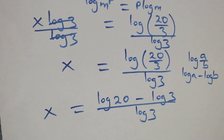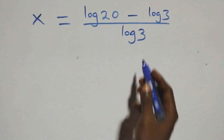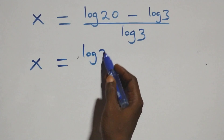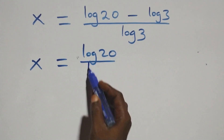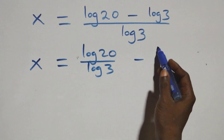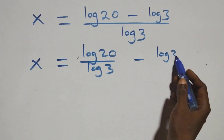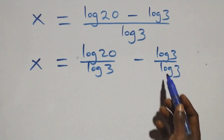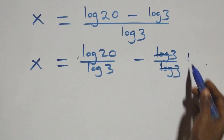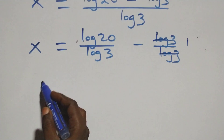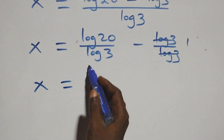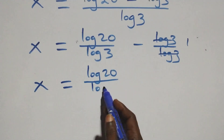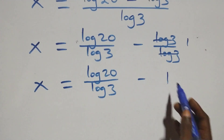Then the next step: we separate this into two fractions. We have x equals log 20 over log 3 minus log 3 over log 3. From here, log 3 over log 3 cancels, which implies x equals log 20 over log 3 minus 1.